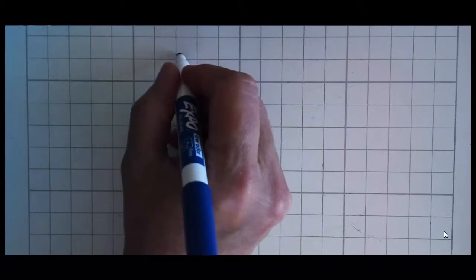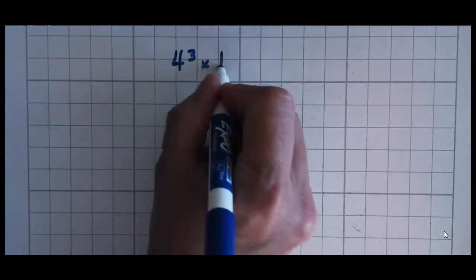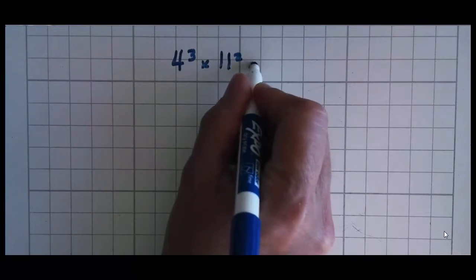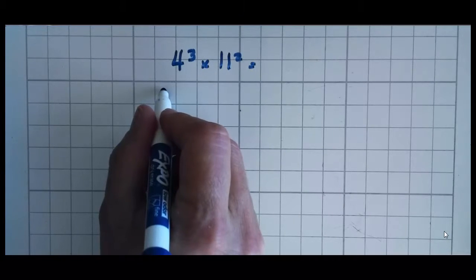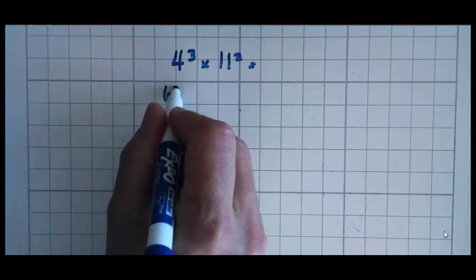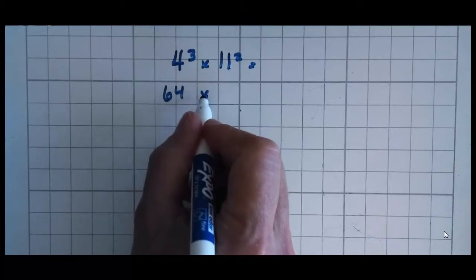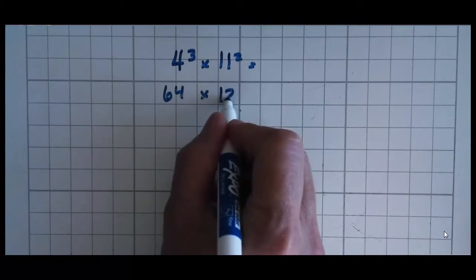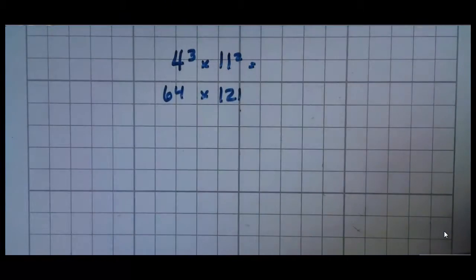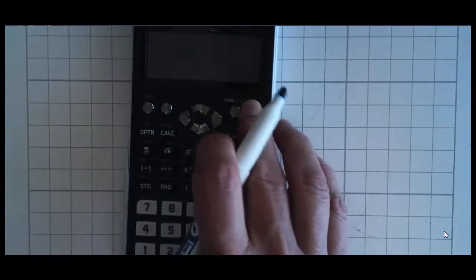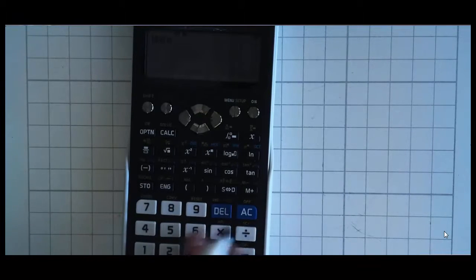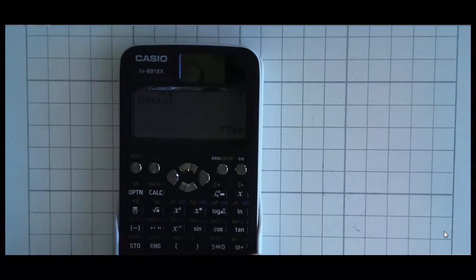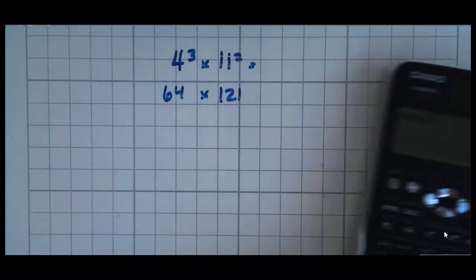If you have a problem like 4 cubed times 11 squared, the easiest way to do that is to cube 4, which is 4 times 4, 16, times 4, 64, times 11 squared, which is 121. And off the top of my head, I can't tell you what 64 times 121 is, but my calculator can. And it is 7,744.